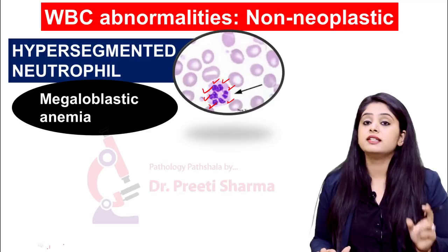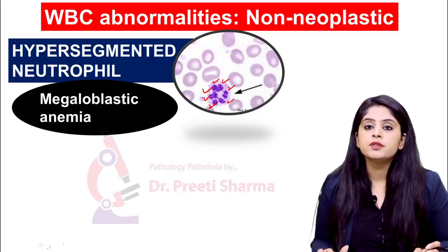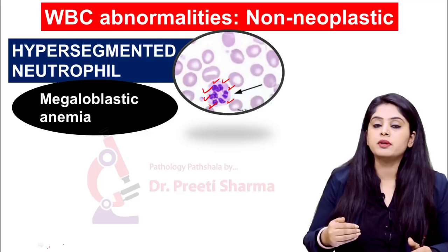Which anemia was showing this hypersegmented neutrophil? It was megaloblastic anemia — the anemia in which there was B12 and folic acid deficiency. But are there other conditions? Yes — you can also see this in alcoholism and liver diseases. But for the exam, when you read this, the first anemia you should think of will always be megaloblastic.